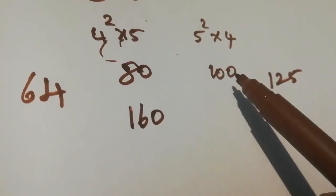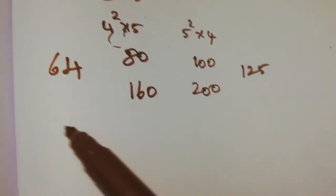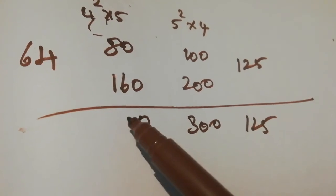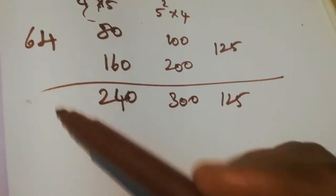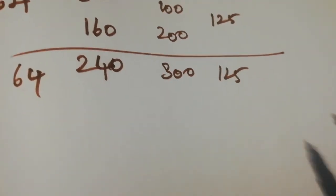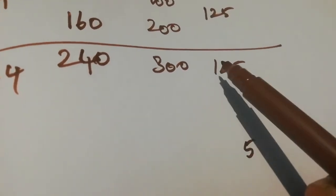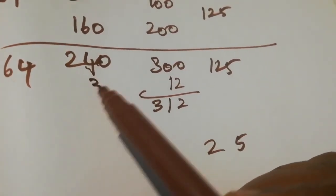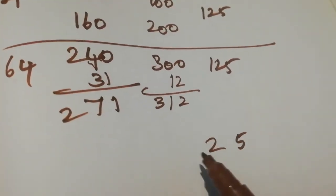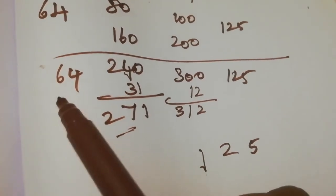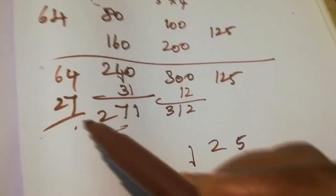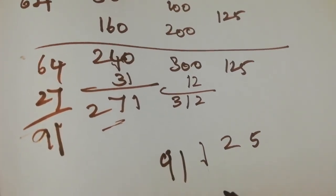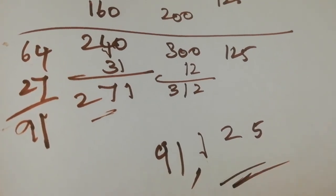Then multiply 80 by 2 to get 160, and multiply 100 by 2 to get 200. Now we add the columns: starting from 125, then 200 plus 100 is 300, carry over the digits. Adding column by column with carries gives us the final answer: the cube of 45 is 91,125.